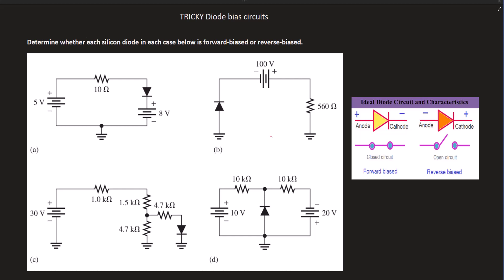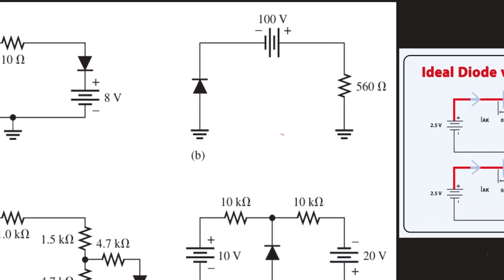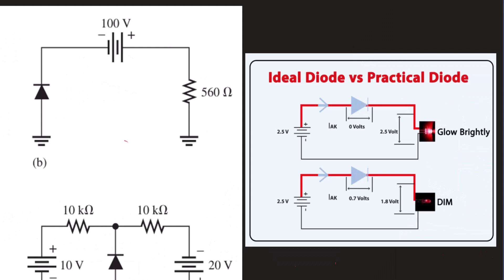When the ideal diode is reverse biased, it will be open — so there's not going to be any current crossing over in reverse bias mode. In a practical diode application, for a silicon diode there is going to be a 0.7V drop across the diode when it's conducting. These 0.7V will result in power losses, meaning only 1.8V is delivered to the load instead of the full 2.5V.